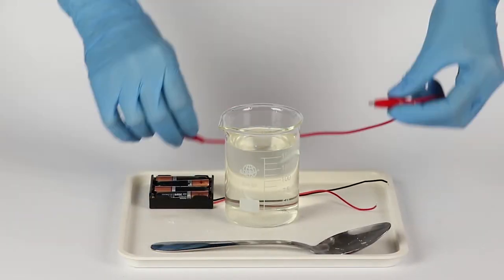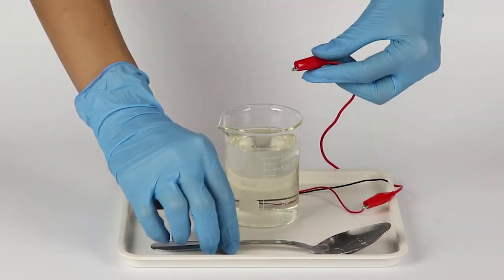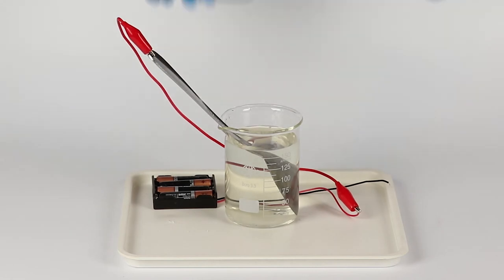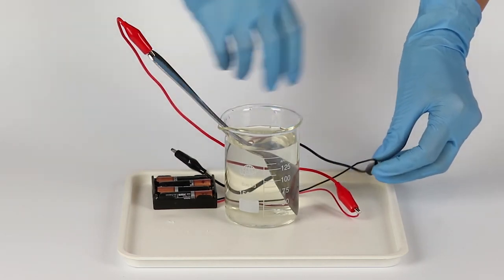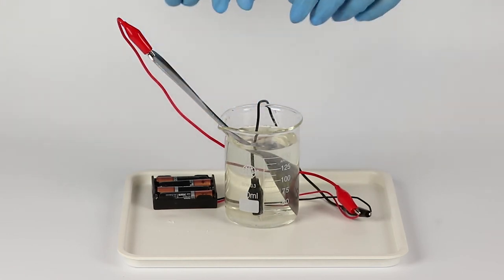Take the battery holder with the batteries and connect the red wire with it using the red crocodile clip wire. Put the spoon into the solution and attach the clip to it. Now connect the black crocodile clip wire to the black wire of the holder. Put the loose end of the wire into the solution and the electrolysis process will start.